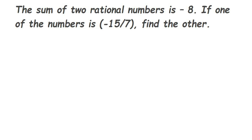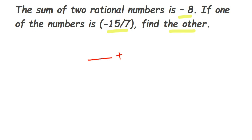Hi everyone, here we have a question from rational numbers. The question is: the sum of two rational numbers is -8. We have given the sum of two numbers is -8, and we are adding two rational numbers where the answer is -8.